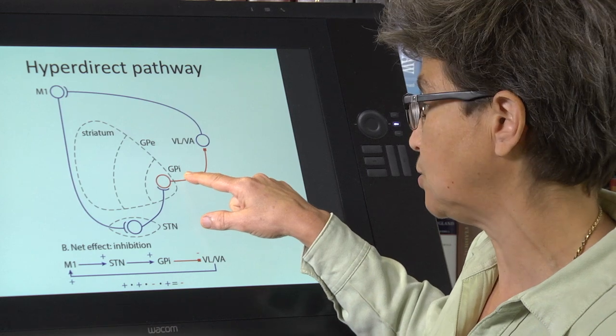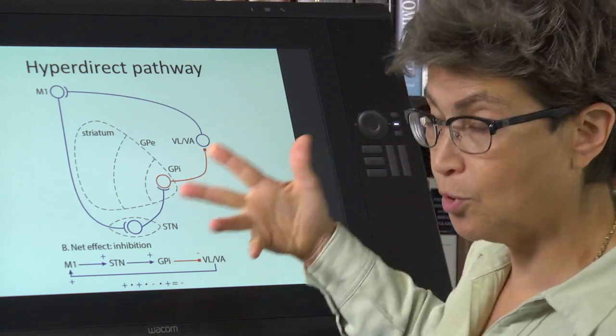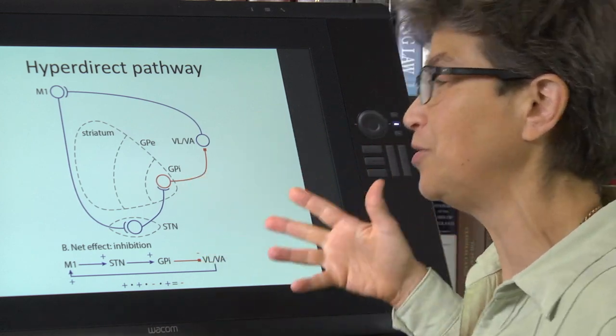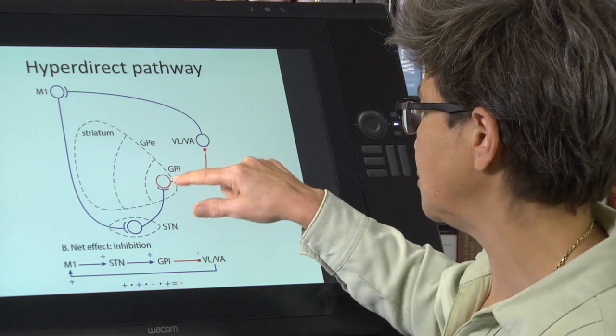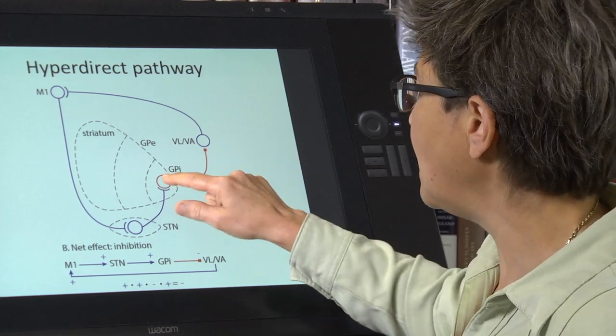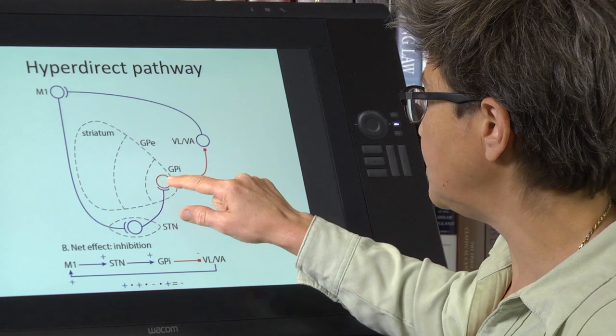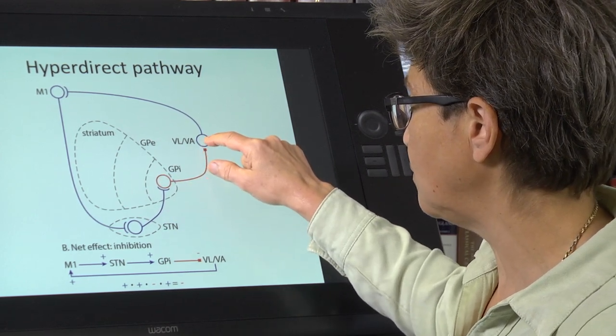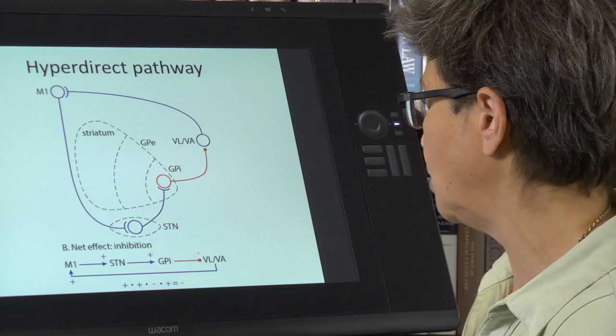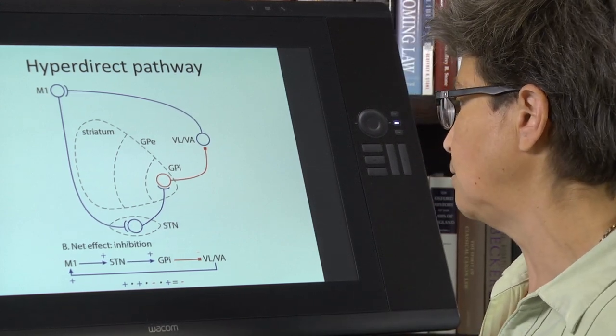It could also be substantia nigra pars reticulata. But in the case of the skeletomotor loop, it's the globus pallidus internal. From there, these GPI neurons inhibit thalamus, which then go on to contact M1.